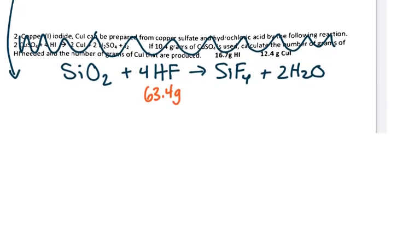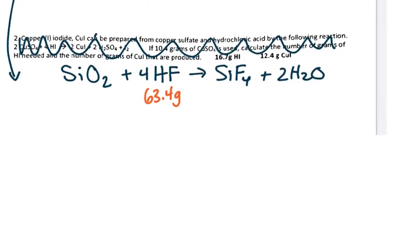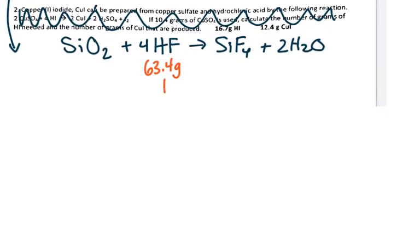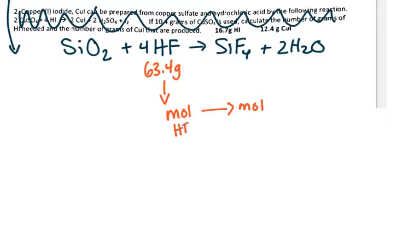So I'm starting with 63.4 grams of HF, and then I'm looking for moles of SiF4. So I'm going to convert from grams to moles, and then moles of HF, because that's still the line that we're in here. And then we're going to change from moles of HF to moles of SiF4. So that's our first stop, and then our second stop is grams of SiF4.